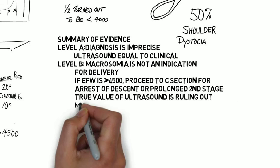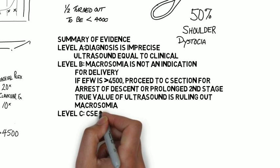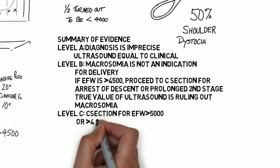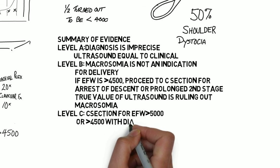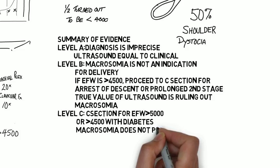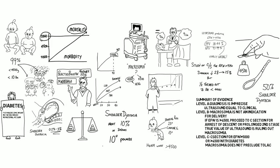Level C: Cesarean section for estimated fetal weight of greater than 5,000 grams or greater than 4,500 in the presence of diabetes should be considered. And macrosomia alone does not preclude TOLAC, trial of labor after cesarean.